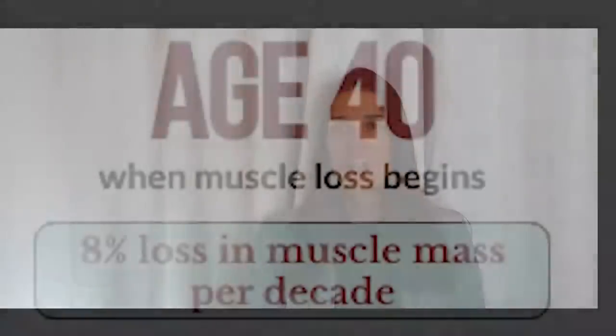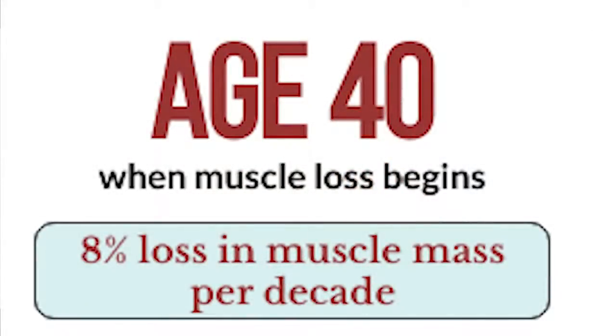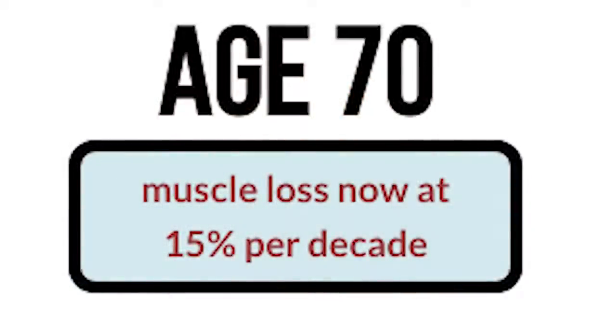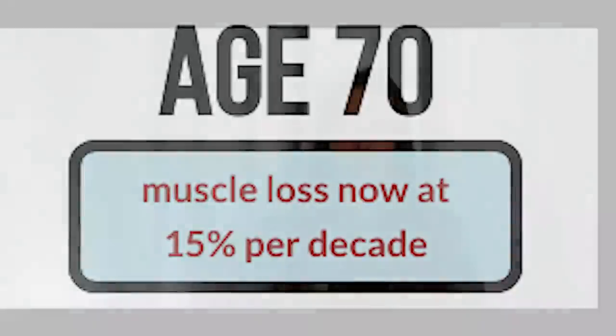Muscle loss begins at about age 40 in both men and women. We lose about 8% of total body muscle mass every decade until age 70. Unfortunately, at this point, the progressive loss of muscle mass accelerates to 15% per decade. This decline is most notable in the leg muscles, increasing the risk of falls and disability as we age.